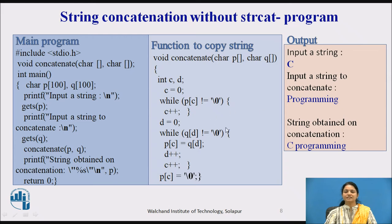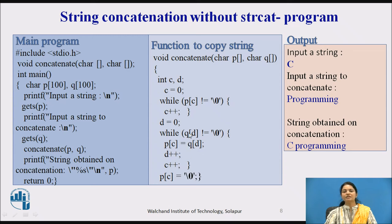First, 'C' is copied, then null is encountered, and then the second counter starts at d equal to zero. The characters 'p', 'r', 'o', 'g', 'r', 'a', 'm', 'm', 'i', 'n', 'g' are copied one by one. Once all characters of the second string are completed, the second loop finishes. So in total, you get 'C programming' stored in p, and the output printed is 'concatenation is C programming'.